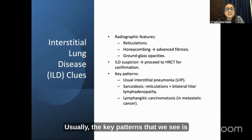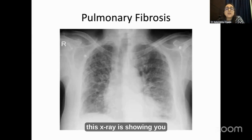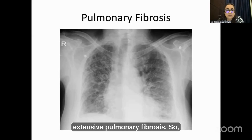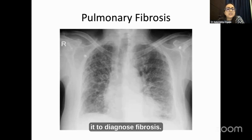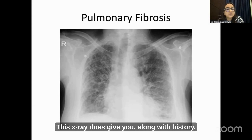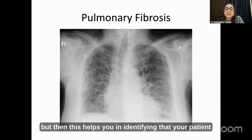Key patterns include UIP pattern in IPF, sarcoid with reticulations, bilateral hilar lymphadenopathies, and lymphangitic carcinomatosis. This X-ray is showing extensive pulmonary fibrosis. So don't always keep in mind that CT is going to be the only way to diagnose fibrosis — this X-ray combined with history and clinical examination can lead you to proceed to a CT scan.